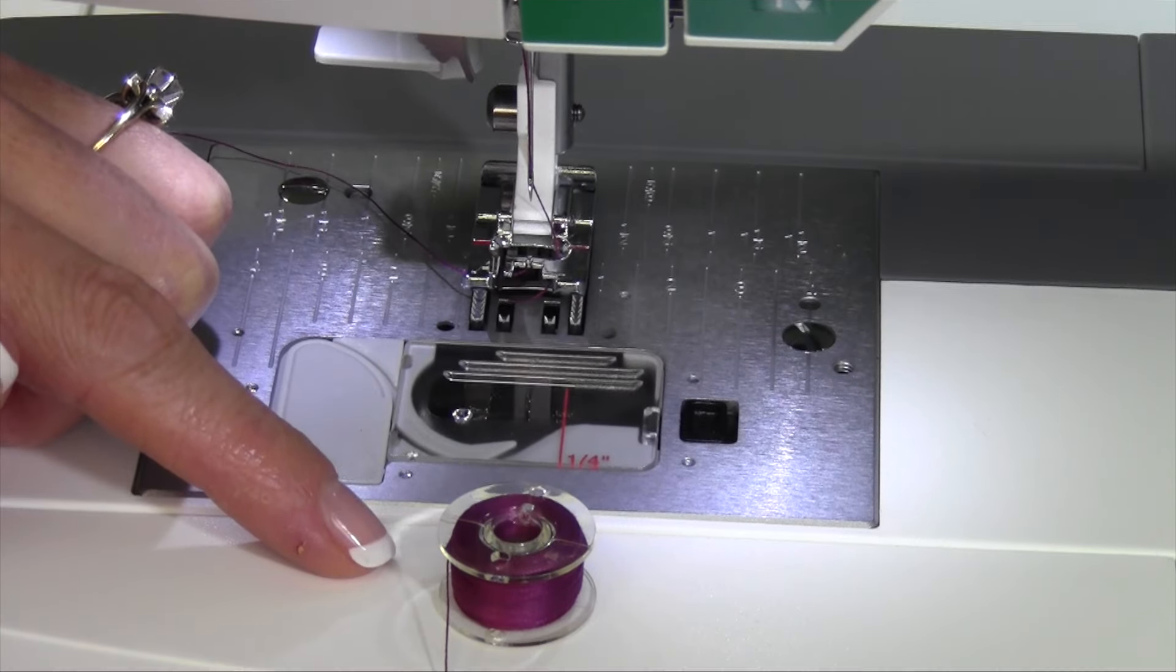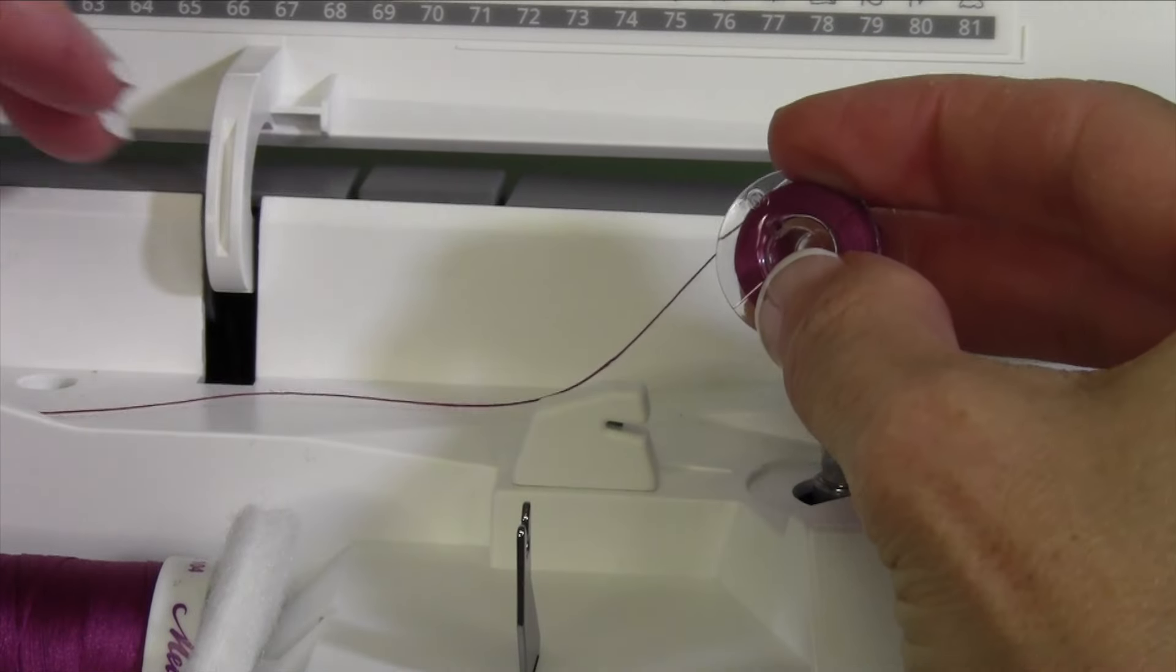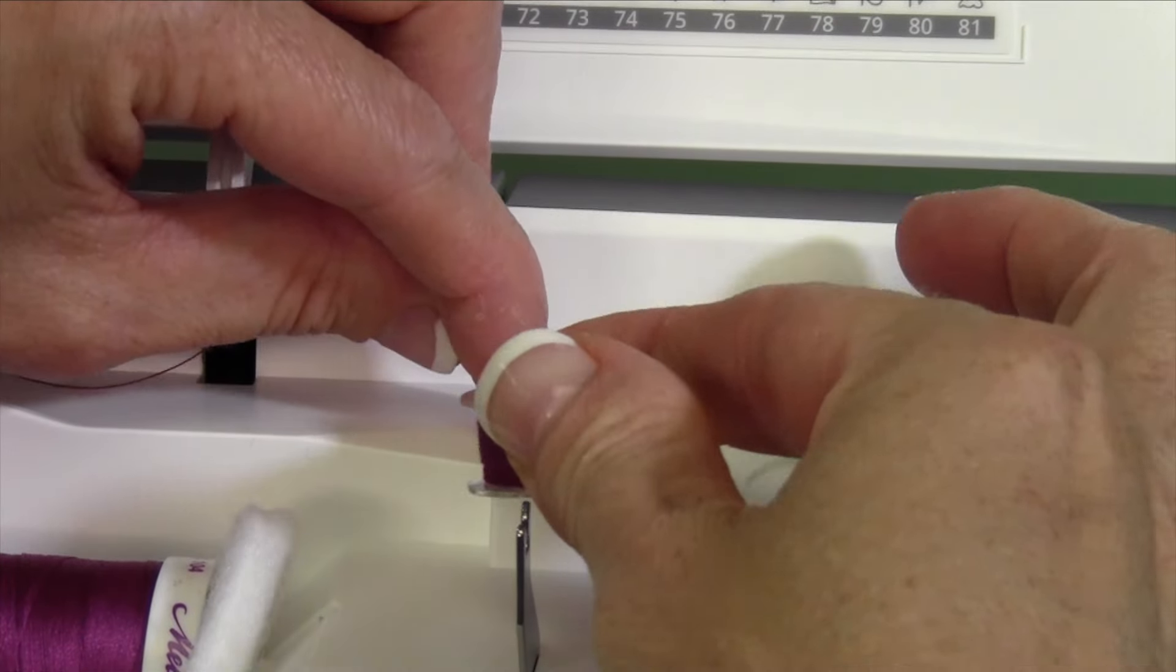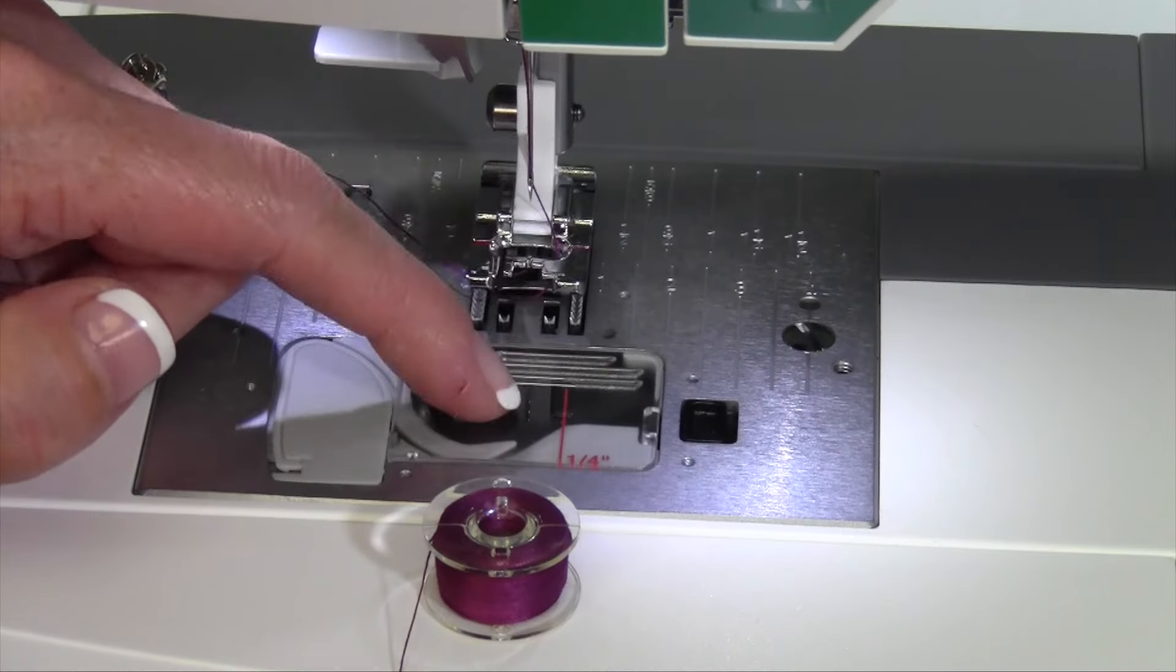After you wind your bobbin, if you'll notice, if you pull the bobbin directly up from the bobbin winder, it is actually the correct direction for it to come down into the bobbin case.